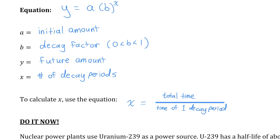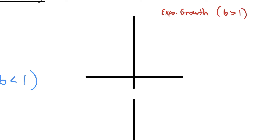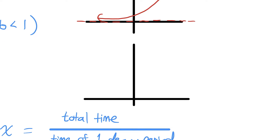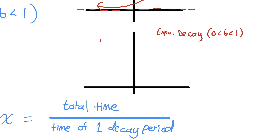Before we move on, let me quickly remind you about what the graphs of these functions look like. I've made two graphs. Exponential growth, when the base of the power is greater than one, looks like an increasing curve with a horizontal asymptote at y equals zero. An exponential decay function, when b is between zero and one, will look like a horizontal reflection of that — it's a decreasing function; as x increases, y decreases, but it still levels off towards that horizontal asymptote at y equals zero.